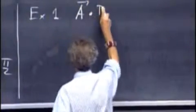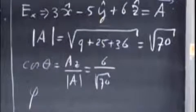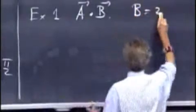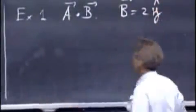Suppose we have A dot B, and A is the one that you already have on the blackboard there. Right here, that's A. But B is just 2Y hat. That's all it is.